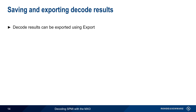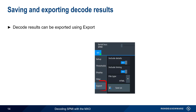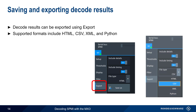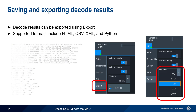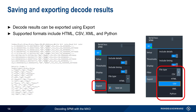Decoded results can be exported by choosing Export from the SPMI menu. The supported export formats include HTML, CSV, XML, and Python. The CSV example here shows the type of data included in the export: timing and summary information is provided line by line, followed by the decoded values for each individual frame.